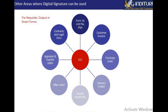These types of forms can include Form 16, payroll, customer invoices, purchases, deliveries, quality assurance, quality inspection checks, offer letters, appraisals, contracts, legal documents, and more — all documents available within SAP. If you have the smart form, it can be converted to Adobe form and the digital signature assigned.